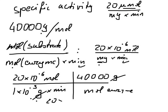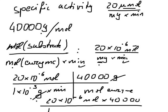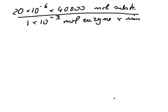We have grams here, so we write it so the grams cancel out. We have 40,000 grams per mole of enzyme. So we now have 20 times 10 to the minus 6 moles of substrate times 40,000 divided by 10 to the minus 3 moles of enzyme times minute. Putting that into the calculator gives us 800.